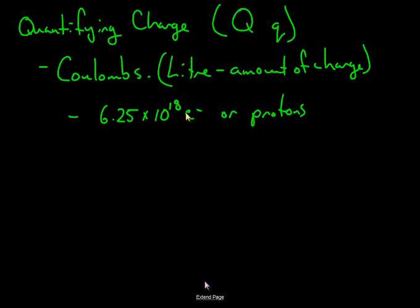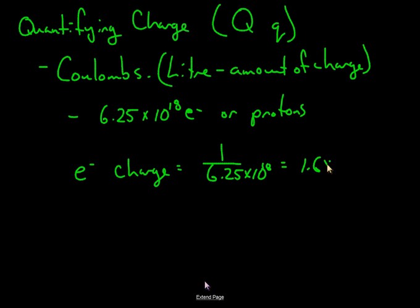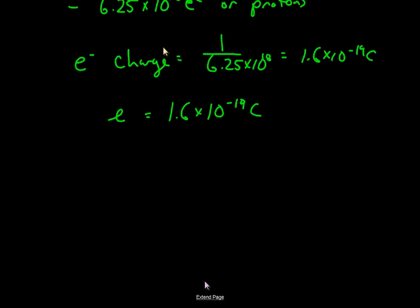And so by extension, the two charge carriers that we talk about are electrons or protons. That must mean that an electron has a charge equal to 1 over 6.25 times 10 to the 18, which equals 1.6 times 10 to the negative 19 coulombs. We call this the elementary charge. An electron has negative 1.6 times 10 to the negative 19 coulombs and a proton has positive 1.6 times 10 to the negative 19 coulombs. It's the charge on 6.25 times 10 to the 18 electrons or protons, so therefore each one would have a charge of 1.6 times 10 to the negative 19 coulombs.